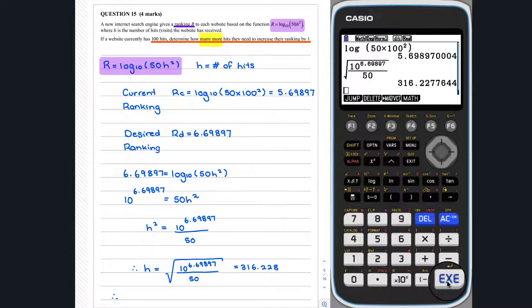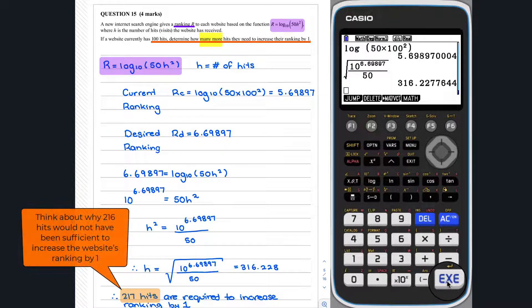So, an additional 217 hits are required to increase the website's ranking by one. Alternatively, we can solve this equation in the Solver app as follows.